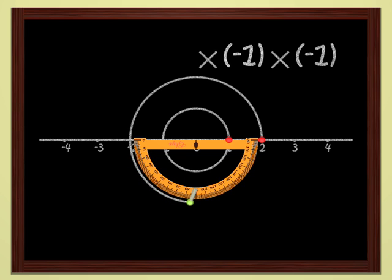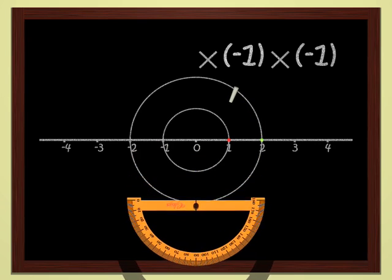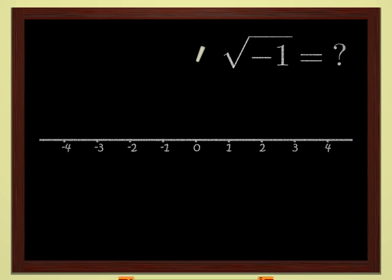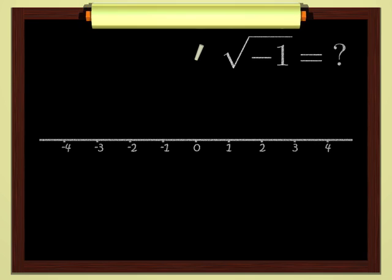Therefore, there is no number which, multiplied by itself, yields negative one. Another way of saying this is that negative one has no square root. But, of course, we are underestimating the inventiveness of mathematicians.